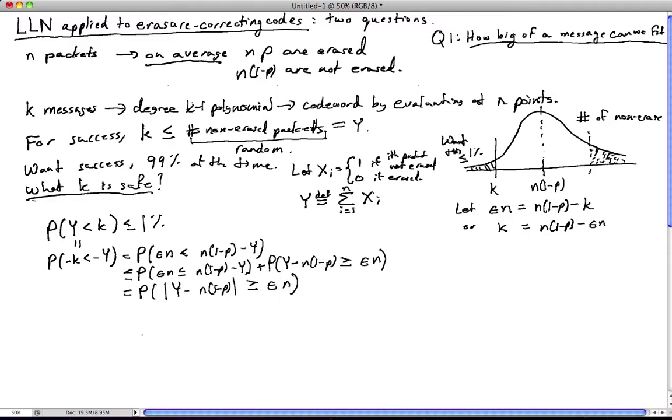So having done this, we're practically in striking range of Chebyshev's inequality. The only problem is that we have Y here, and we want in Chebyshev's inequality an average. So let's just do that. Let's divide through by n. So here's the average we wanted, and here we have the average here, which is the probability of not erasure, and we just have epsilon.